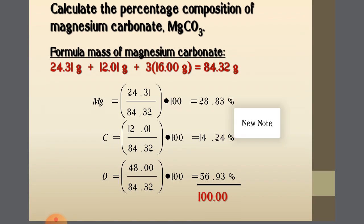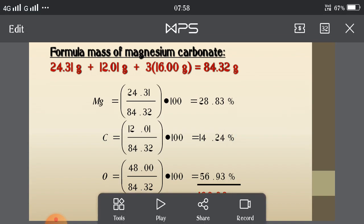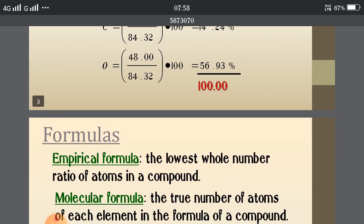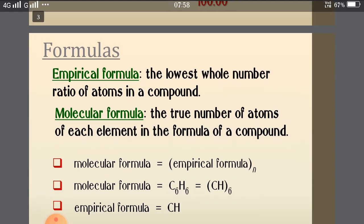If you do the sum of the percentages of magnesium, carbon, and oxygen, it will add up to 100. This is how percent composition works — each element's percentage is fixed in a particular compound. So for magnesium carbonate from any source: Mg = 28.83%, C = 14.24%, O = 56.93%.